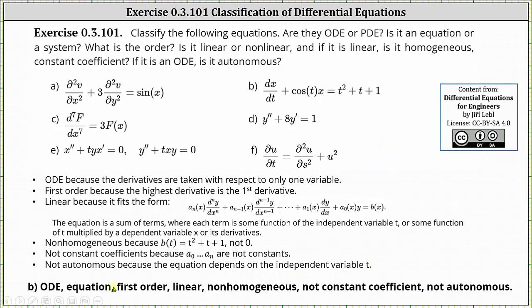We do not have constant coefficients because a-sub-zero through a-sub-n are not all constants — notice the coefficient of x is cosine t. It's also not autonomous because the equation does depend on the independent variable t. In conclusion for B: we have an ODE, we have an equation not a system, the equation has first order, it's linear, it's non-homogeneous, it does not have constant coefficients, and it's not autonomous.